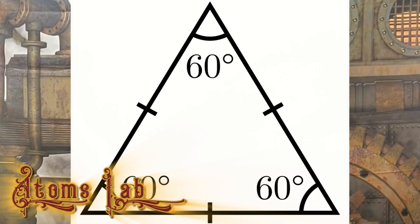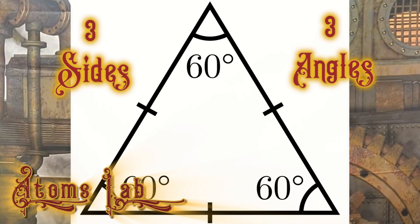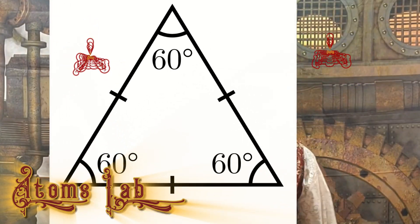You might have an arc as small as one degree, or one as large as 360 degrees, which is a full circle. Triangles have three sides and three angles — let's count them: one, two, three sides; one, two, three angles.